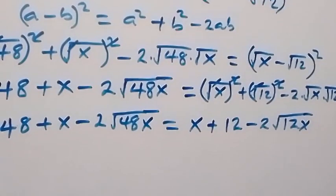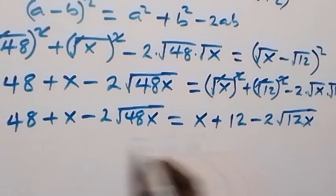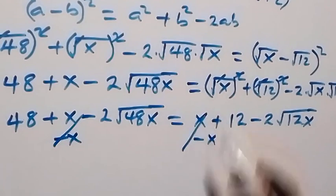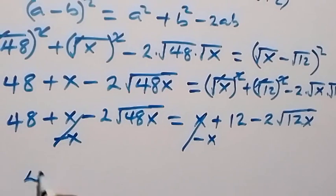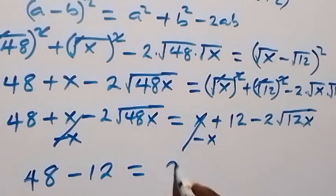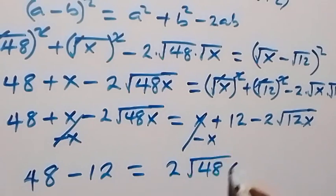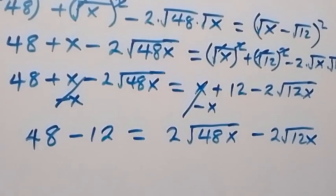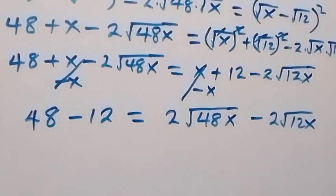Next, we have x on this side and x on the other side. When we subtract x from both sides they cancel each other. Bringing like terms together, we take 12 to the left side, giving us 48 minus 12 equals minus 2 root 48x becomes plus, so we have 2 root 48x minus 2 root 12x.